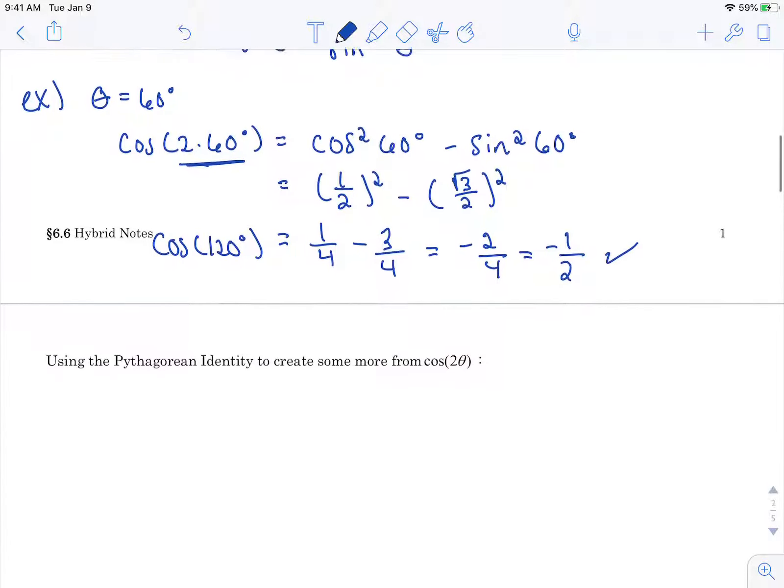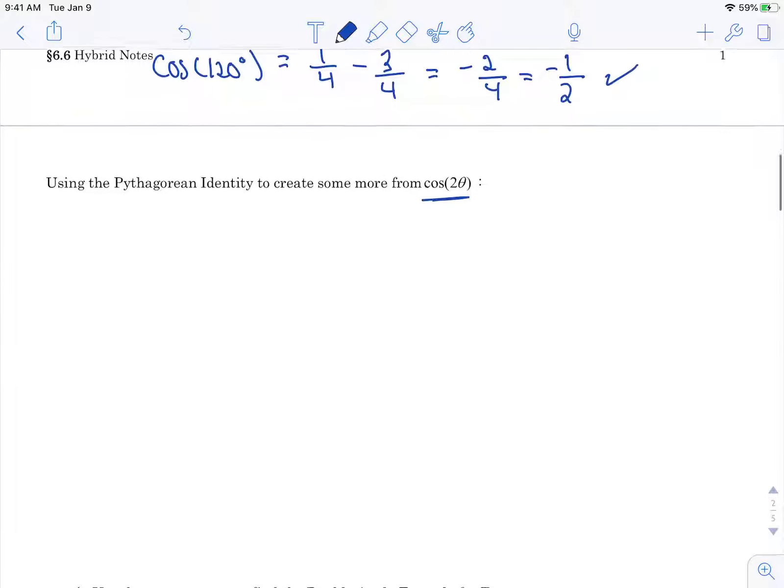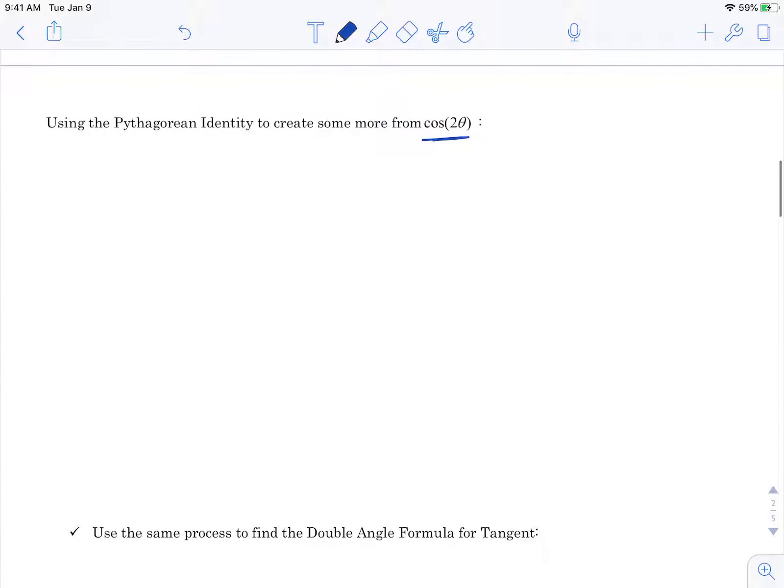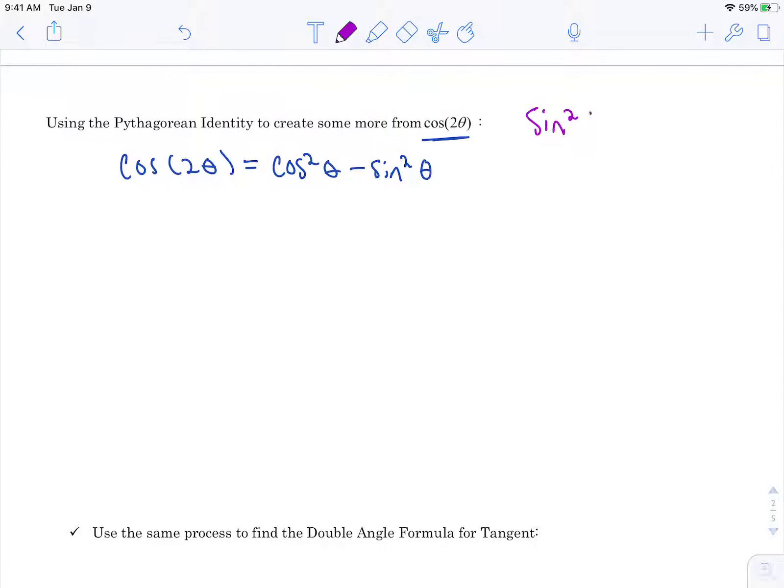So there's two more formulas for cosine of 2 theta and you use what seems appropriate in the problem. So the first one we just found was cosine of 2 theta is cosine squared minus sine squared. If we want to find the other ones we're going to use this identity that hopefully it's starting to stick in your mind especially after the last section because we used it a lot. This identity is always true.